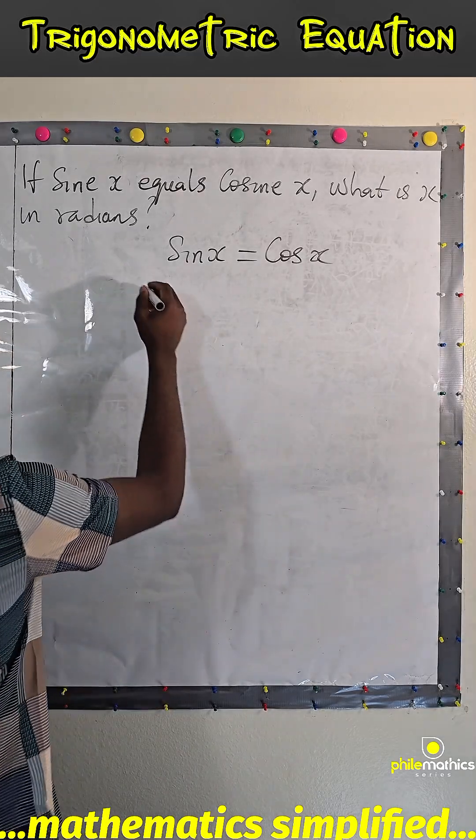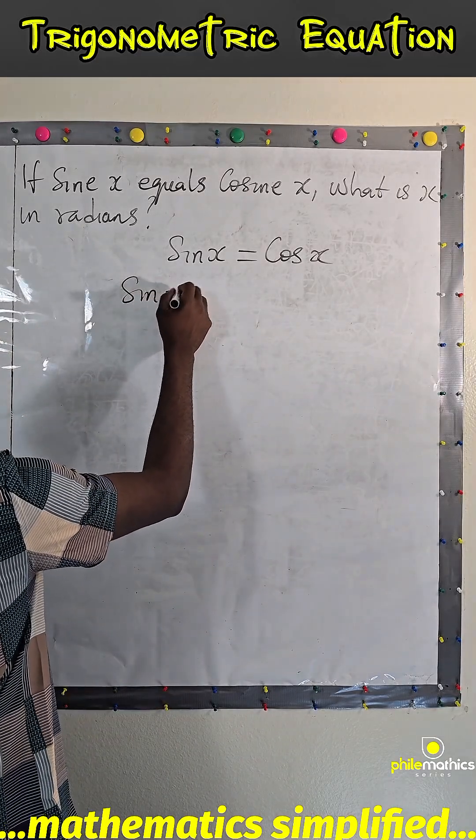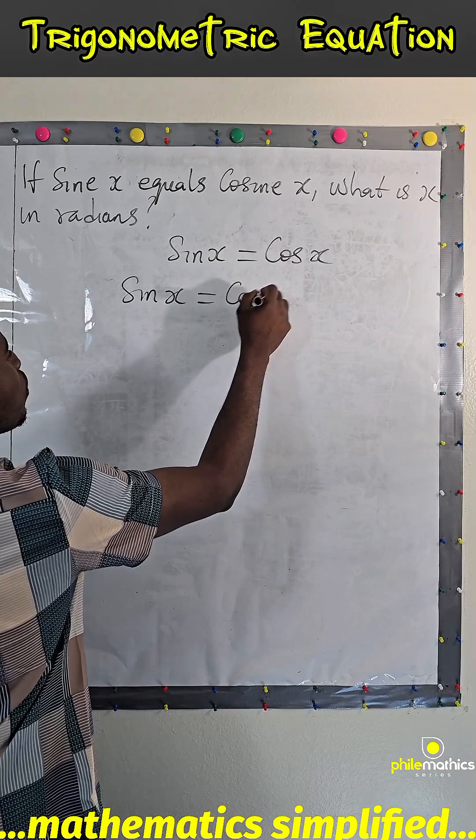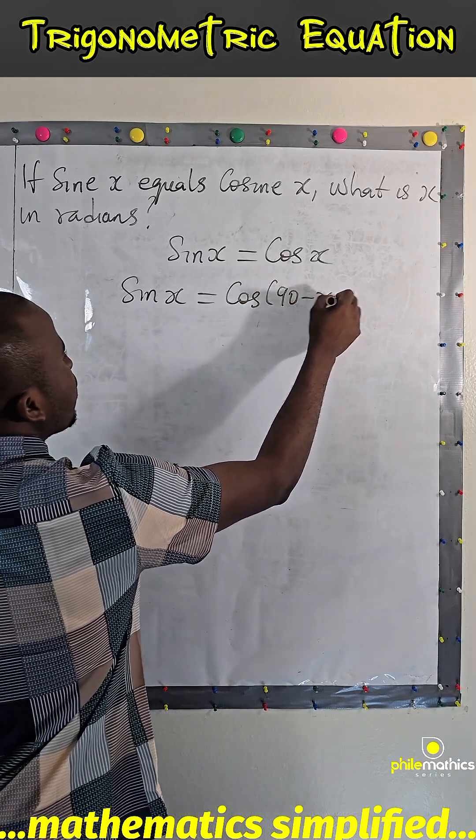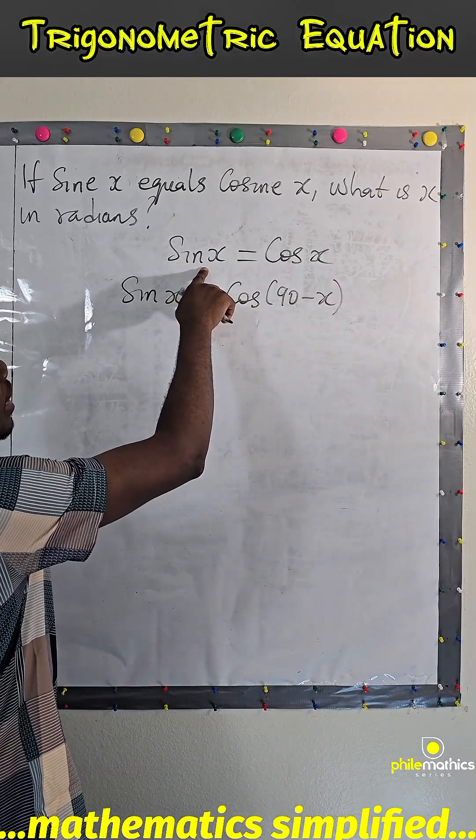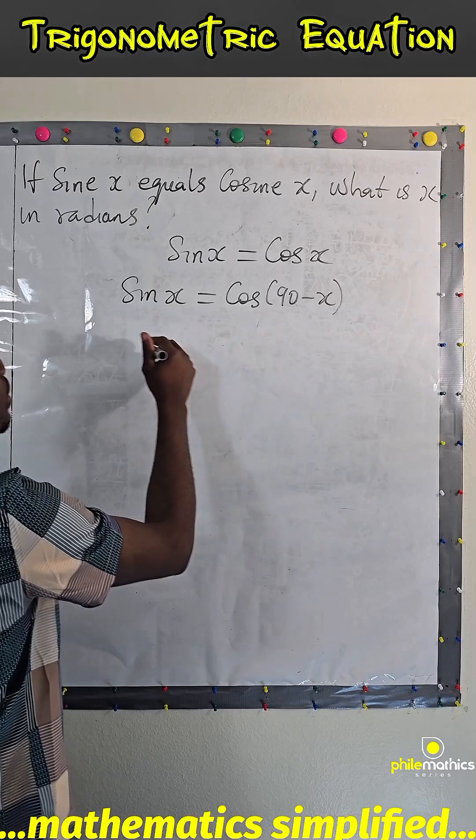That means sine x is the same as cos 90 minus x. So in place of sine x, I can replace it with cos 90 minus x.